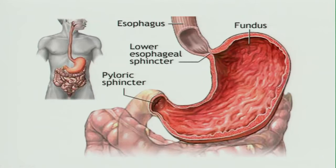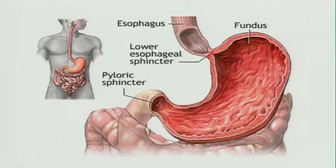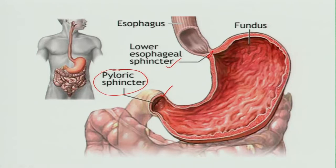Sphincters prevent the backflow of food out of the digestive tract. Normally food should not come back out through the mouth after eating — this is protected by the lower esophageal sphincter at the entrance of the stomach. After food leaves the stomach, there is another sphincter called the pyloric sphincter, so that food moves in one direction and does not come back.